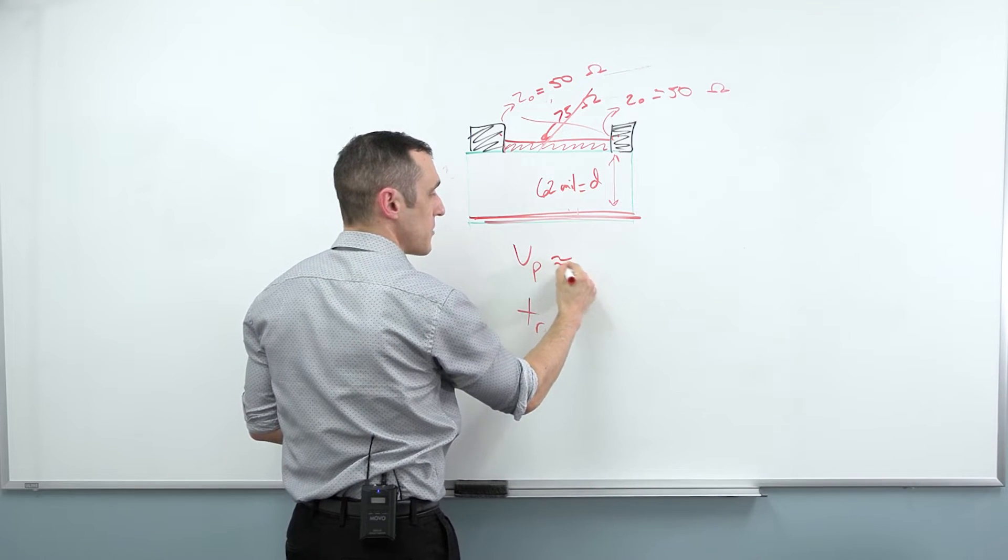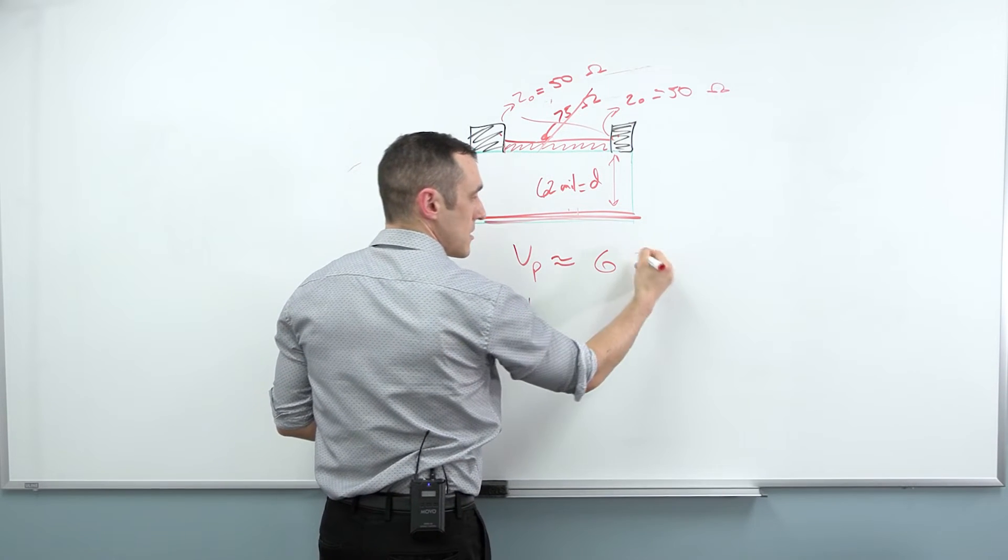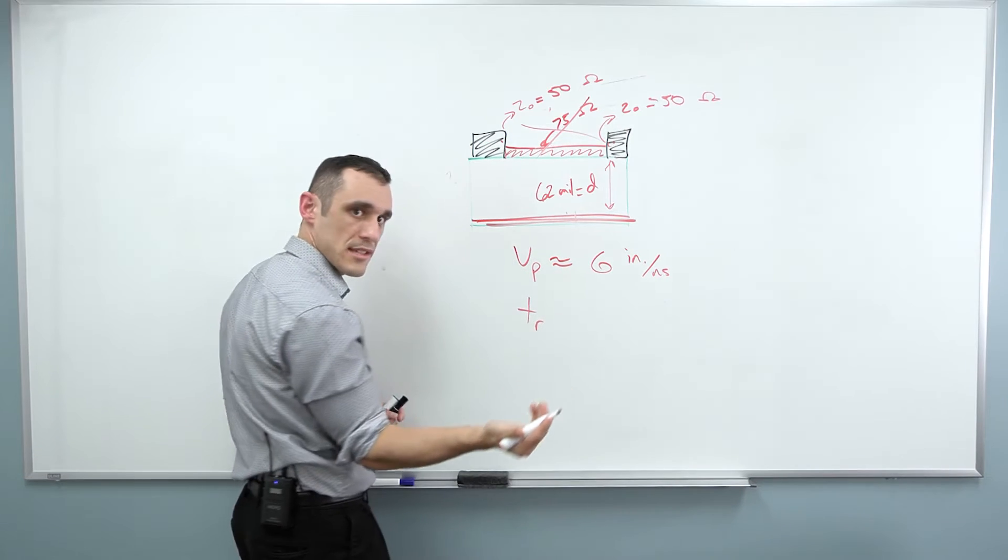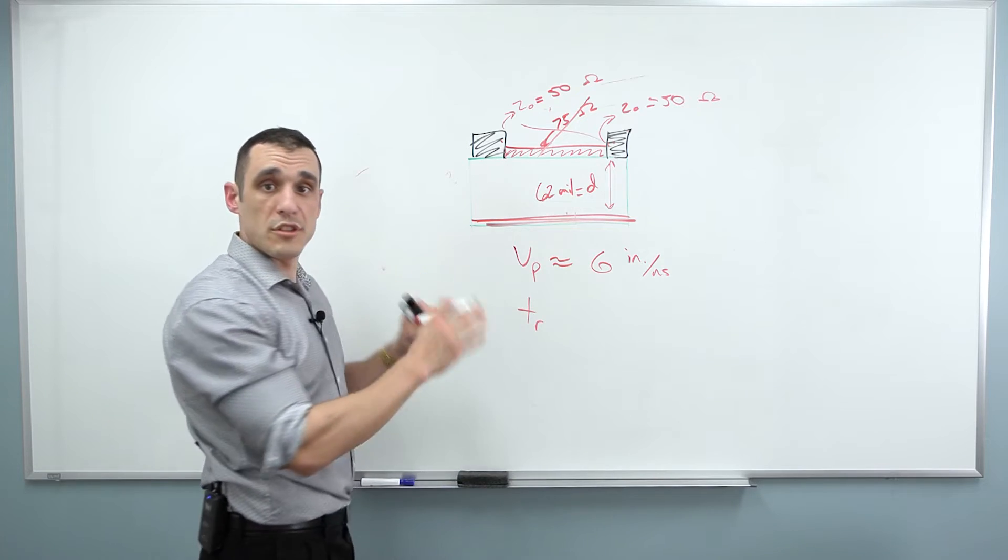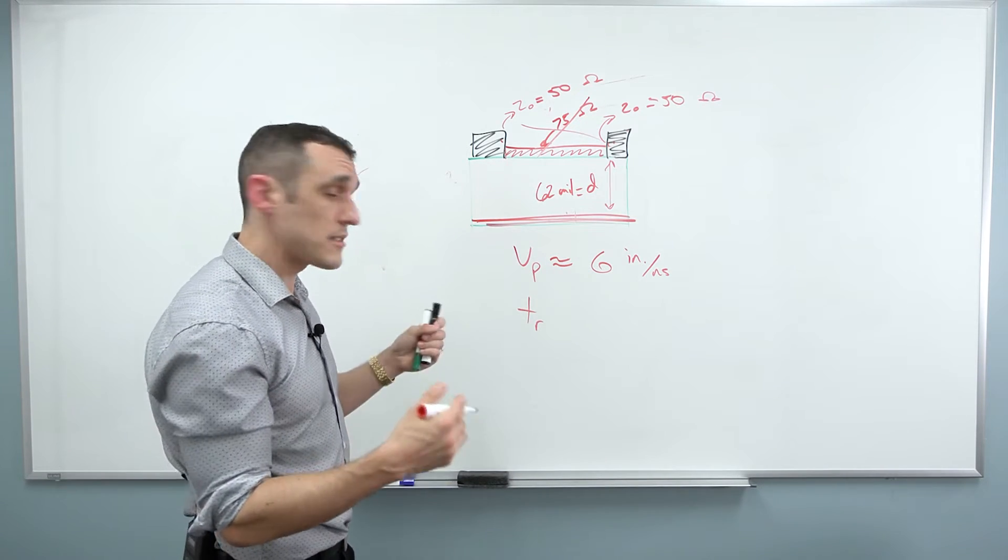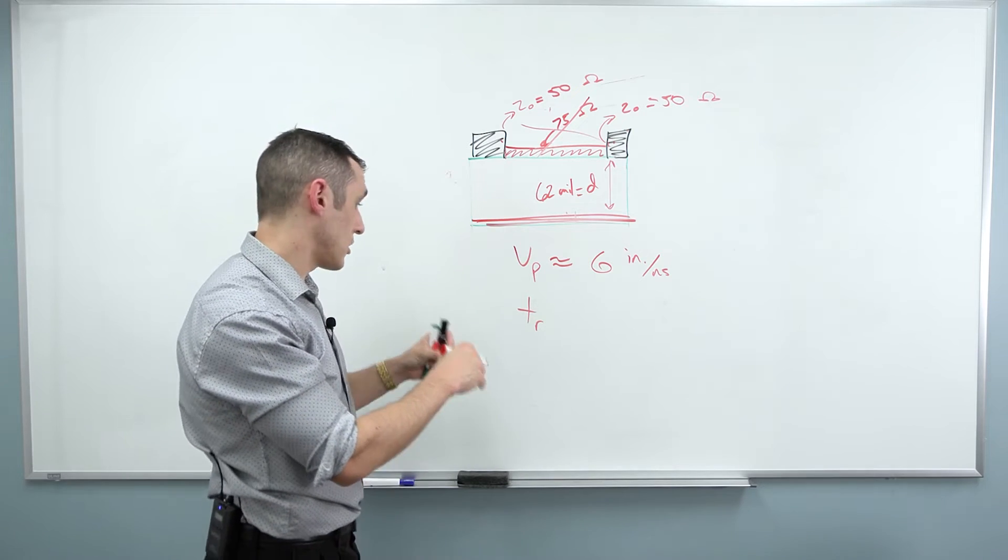For microstrip traces or for a trace on the surface layer, this is gonna be something around six inches per nanosecond. What does the rise time need to be?